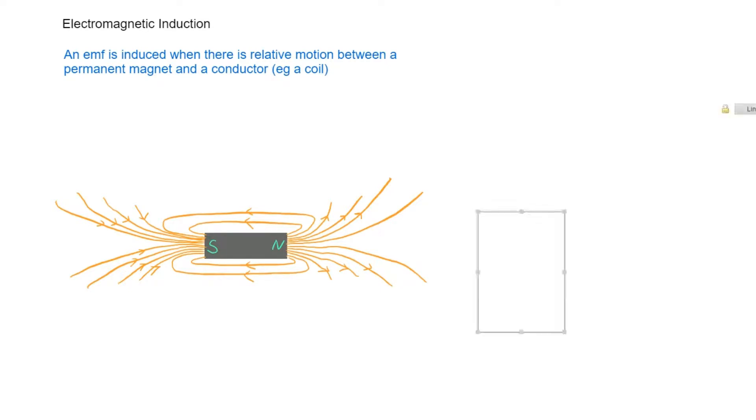The best way to understand this is to look at an example. You need to understand qualitatively that there's an EMF induced when there is relative motion between a permanent magnet and a conductor, especially a coil. So let's have a permanent magnet and a coil. There's a little meter here, that G stands for galvanometer, which is basically a mechanical ammeter with a needle which registers when current flows.